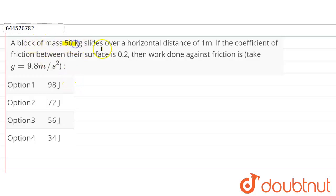A block of mass 50 kg slides over horizontal distance 1 meter. If the coefficient of friction between their surface is 0.2, then the work done against the friction is... So see here.